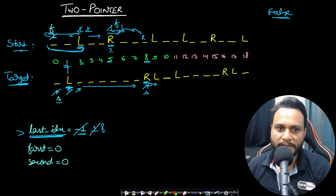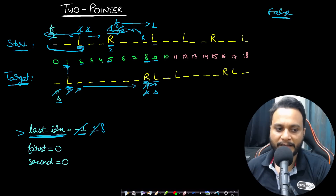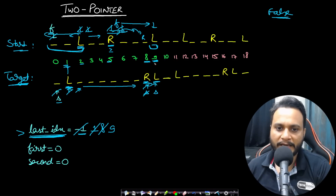We do first++ and second++, skip spaces. First points to L at index 9 and second also points to L at index 9. Both characters are same. The movable range for this L is from index greater than 8, so from 9 to 9. The target L index is 9, falling in that range — completely fine. We update last index to 9, then do first++ and second++.